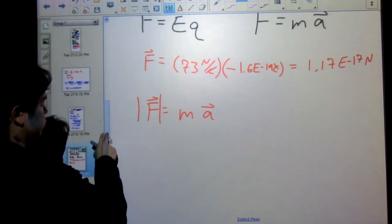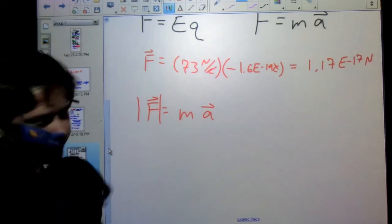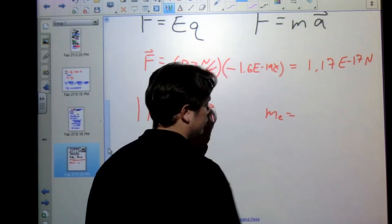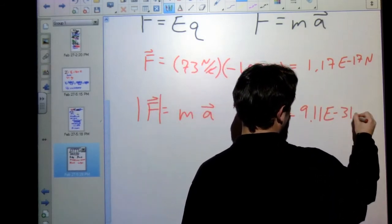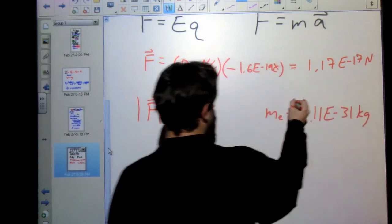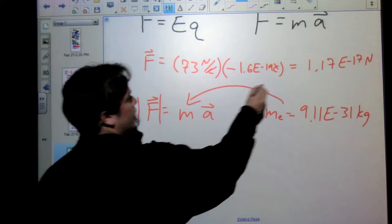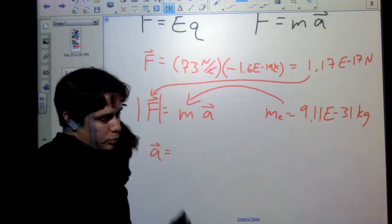Our force comes up to 1.17 times 10 to the negative 17 newtons, if I've done that correctly. We're going to set that equal to our mass times our acceleration. What's our mass? Well, what's our particle? It's an electron. So I know that I need the mass of an electron, which is equal to 9.11 times 10 to the negative 31 kilograms. Plug that in here because that's the object I'm looking at.